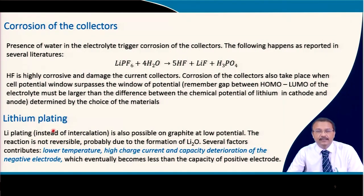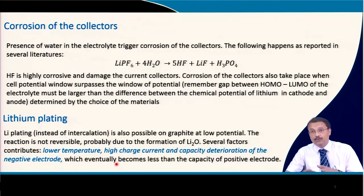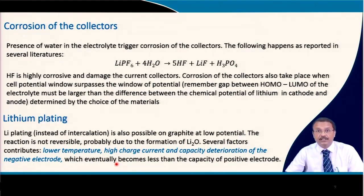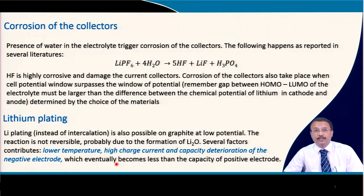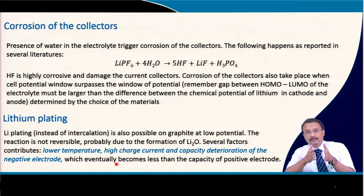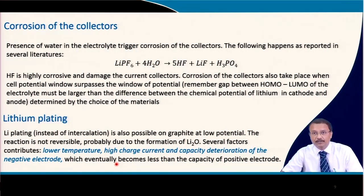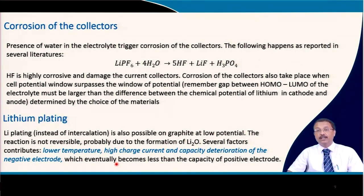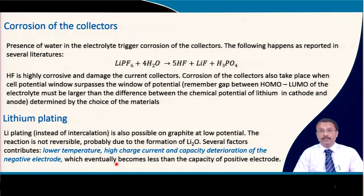Lithium plating is another problem possible for graphite at lower potential, and this reaction is not reversible — Li₂O can also form, which is insulating in nature. Low temperature or high charge current can cause capacity deterioration of the negative electrode. This becomes less than the capacity of the positive electrode, which is more detrimental. Already you have a lower capacity positive material; if you start losing negative material capacity, the full cell capacity will be severely affected.